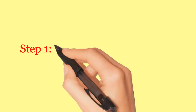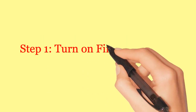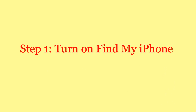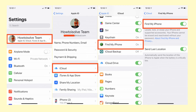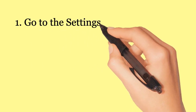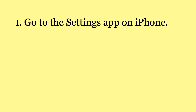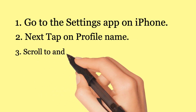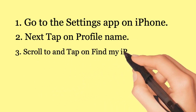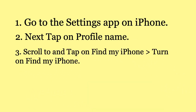Step 1: Turn on Find My iPhone. Go to the Settings app on iPhone. Next, tap on Profile Name. Scroll to and tap on Find My iPhone, then turn on Find My iPhone.